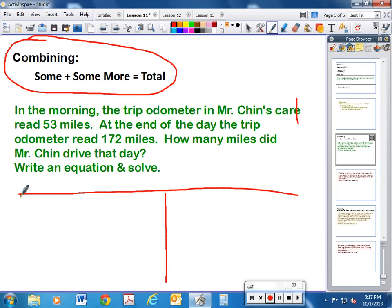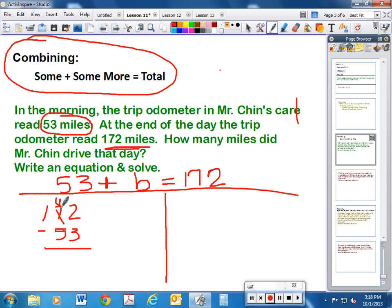So we know that 53 miles was at the very beginning. Do we know how many miles he drove that day, the some more? We don't. So you get to choose a letter, and with these you can choose whatever letter you want. We do know that the total at the end of the day was 172 miles. So that's your equation, and then you would just go ahead and solve it below by subtracting. You subtract, and it looks like 119.